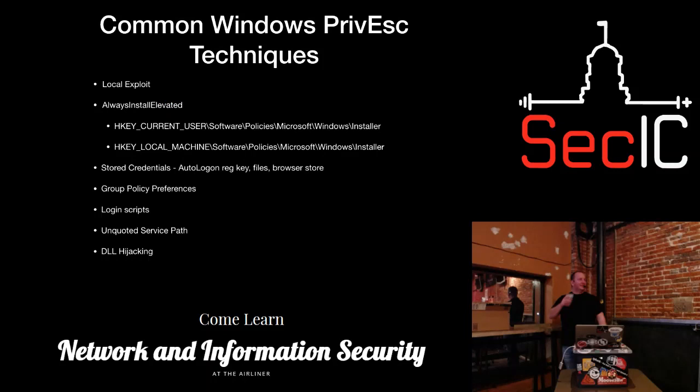I'm going to briefly go over some common Windows privilege escalation techniques. These are all local, assuming you are a standard non-admin, non-system user. This is not in any specific order - just a brain dump of stuff I've done and things I've seen. At the end, I'm going to specifically go through unquoted service paths and briefly touch on DLL hijacking, because there's not a lot of difference there.